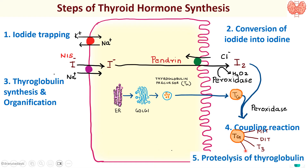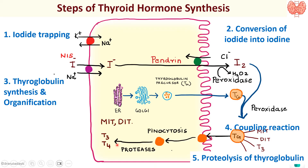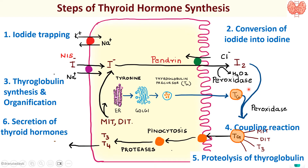For that we have the next step called proteolysis of thyroglobulin. The thyroglobulin is taken back into the cell by pinocytosis and is engulfed by a lysosome, so that proteases present inside the lysosome break it down into MIT, DIT, T3, and T4. We want only T3 and T4 released into the blood. MIT and DIT will be de-iodinated so that the iodine can be recycled for more thyroid hormone production. The different forms of thyroid hormone released are T3, T4, and reverse T3.